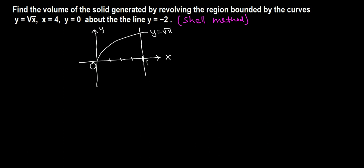It passes through x equals 4, and y equals 0. Y equals 0 is the x-axis. So the region we are considering is this area.